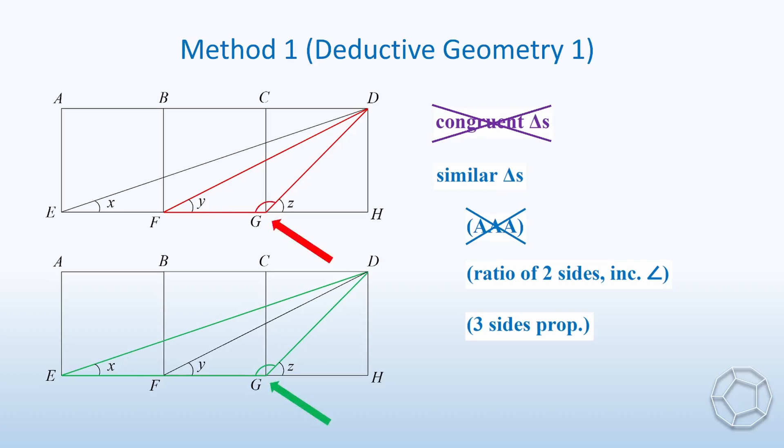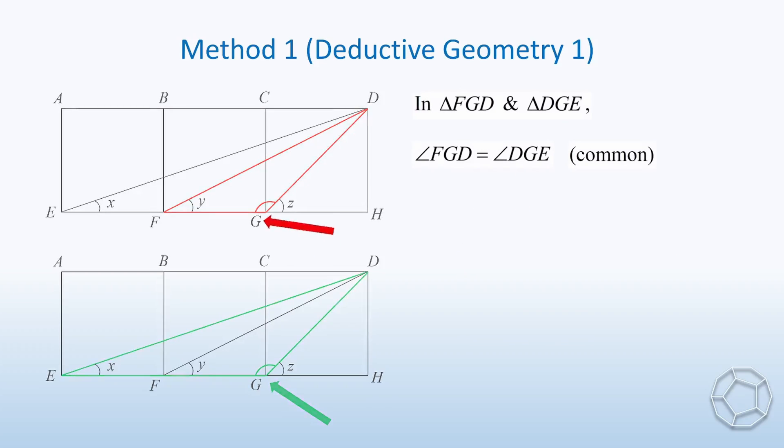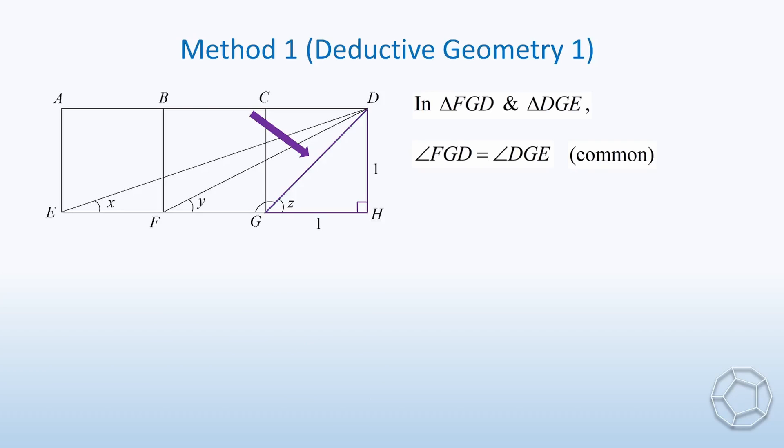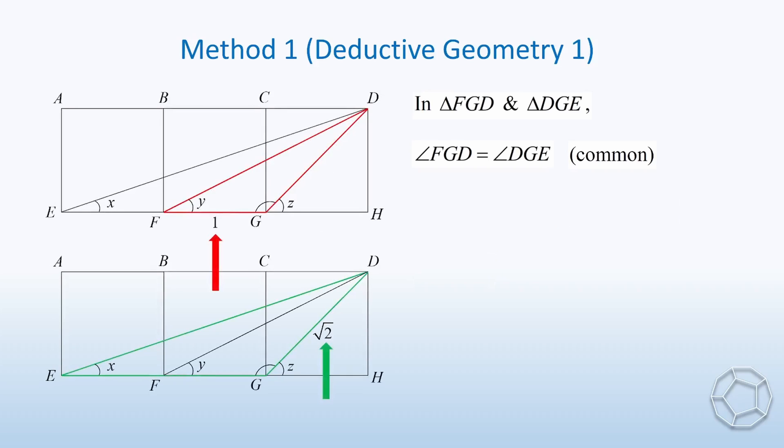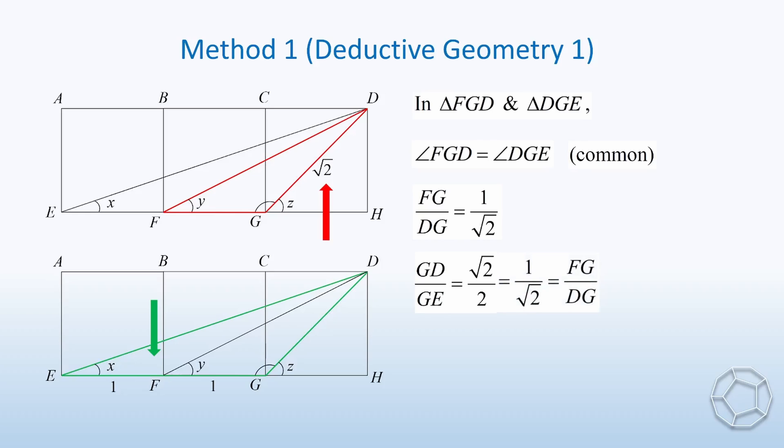You see, this angle at the point G is a common angle for both triangles. Perhaps we can make use of ratio of two sides, including the angle. Let's figure out the length of the sides. In the purple triangle DGE, we can make use of Pythagoras theorem to solve for the hypotenuse DG, which is square root 2. So for the ratio of the first pair of sides, FG over DG is equal to 1 over square root 2. What about the second pair? Now, GD over GE is equal to square root 2 over 2, which is equal to 1 over square root 2. This is exactly the same as the first pair. So we have proved that the two triangles are similar.